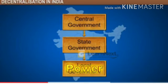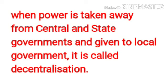This resulted in a third tier of government called local government. When power is taken away from central and state government and given to local government, it is called decentralization. The central and state governments are the powerful units, and when their power is distributed among the smaller units inside the state, that is called decentralization.